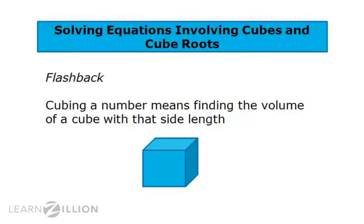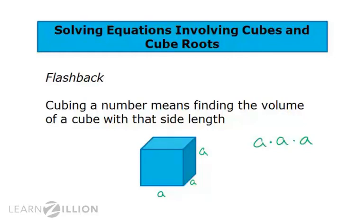Remember that cubing a number means finding the volume of a cube with that side length. Since in a cube all three sides are the same length, you would find the volume by multiplying the side length times itself three times, or raising it to the third power. That is why raising a number to the third power is referred to as cubing the number.